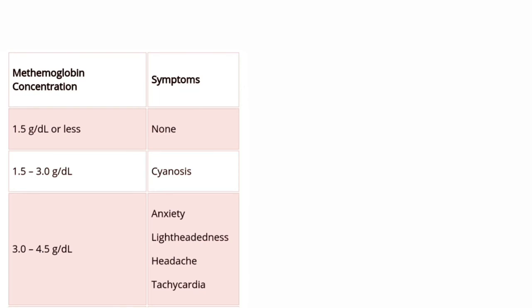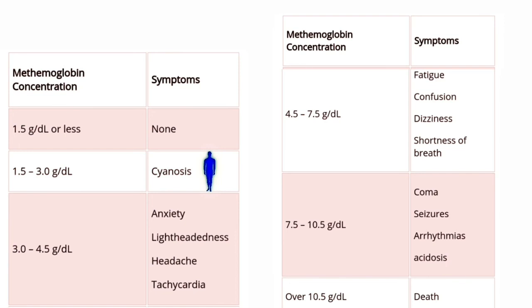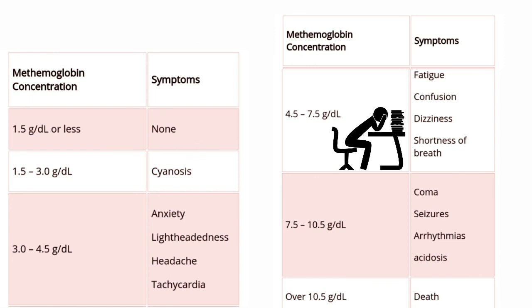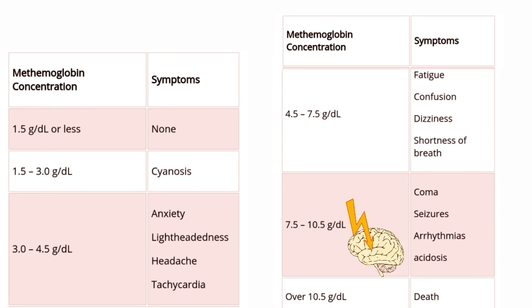When the concentration of methemoglobin is 1.5 g/dL or less, no symptoms are seen. In the range of 1.5 to 3 g/dL, cyanosis is observed. In the range of 3 to 4.5 g/dL, anxiety, lightheadedness, headache, and tachycardia are seen. When the level is in the range of 4.5 to 7.5 g/dL, it shows fatigue, confusion, dizziness, and shortness of breath. In the range of 7.5 to 10.5 g/dL, it leads to coma, seizures, arrhythmias, and acidosis. When it is more than 10.5 g/dL, it leads to death.